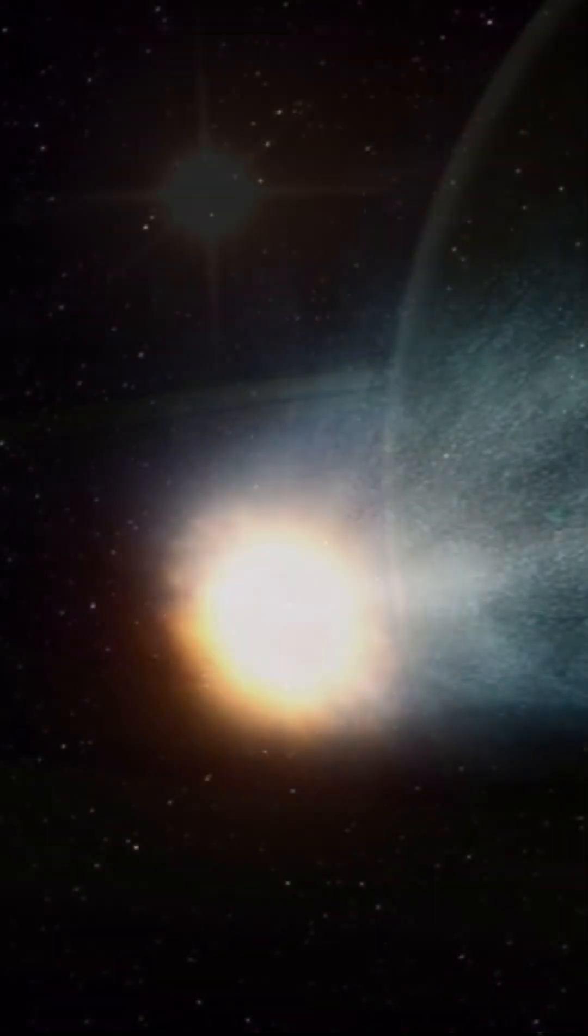But here's what's groundbreaking. This disk contains crystalline water ice, the same kind of ice we find in Saturn's rings and in comets in our own Kuiper belt.